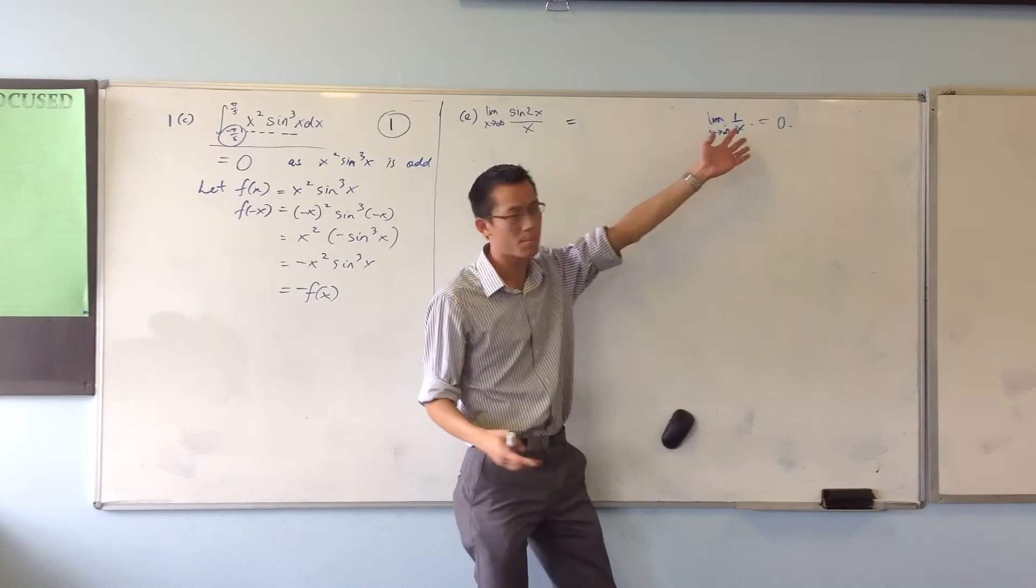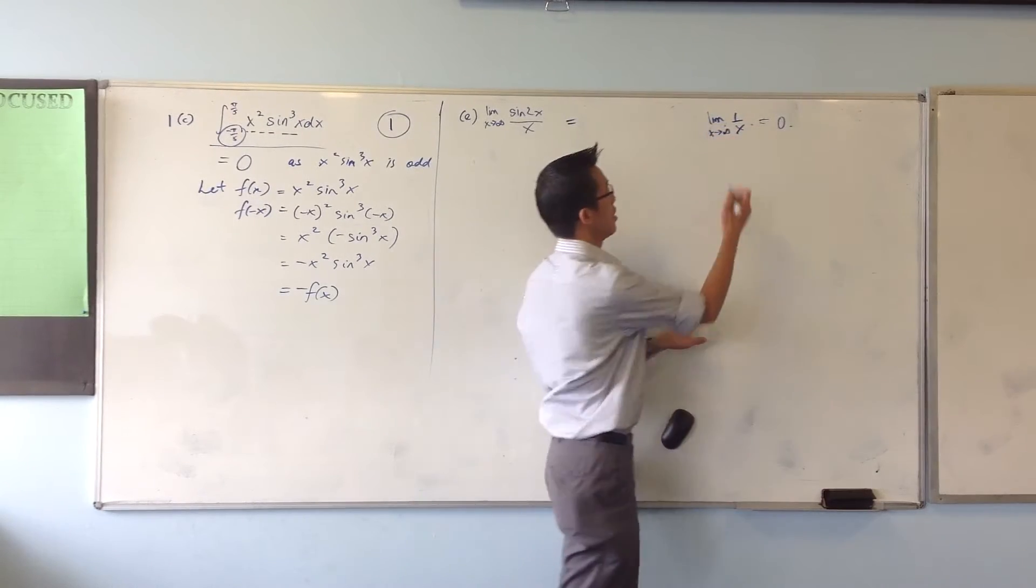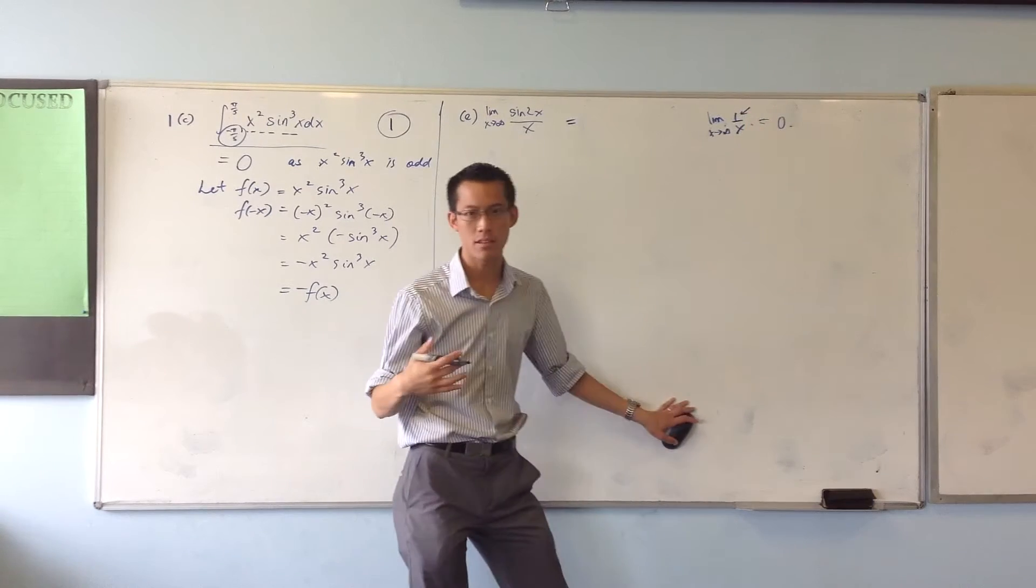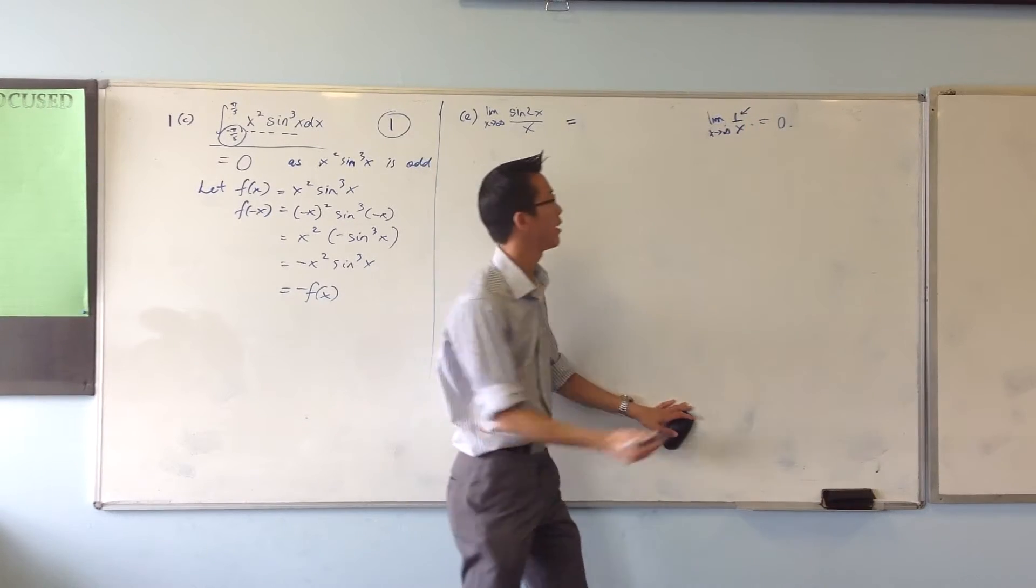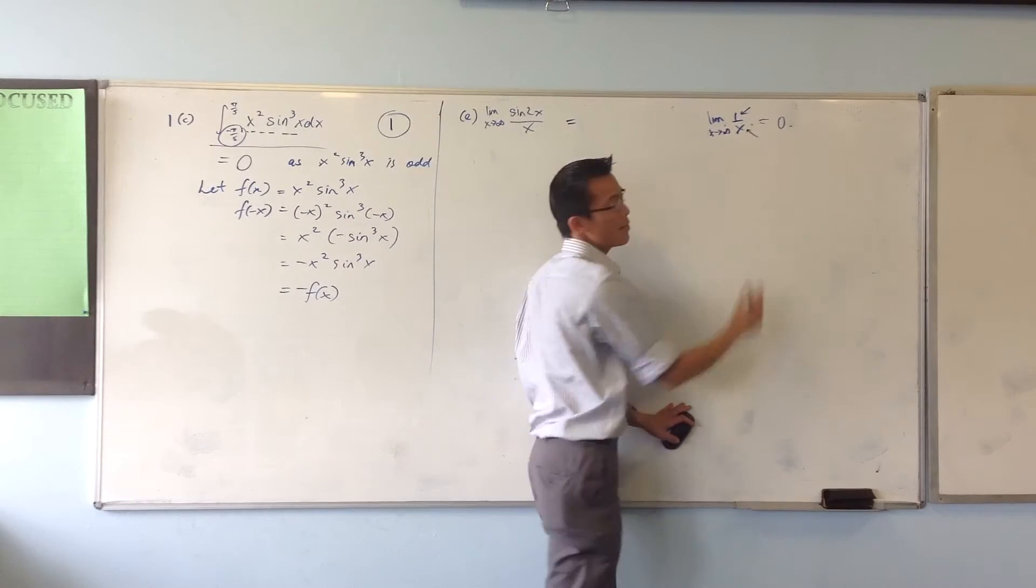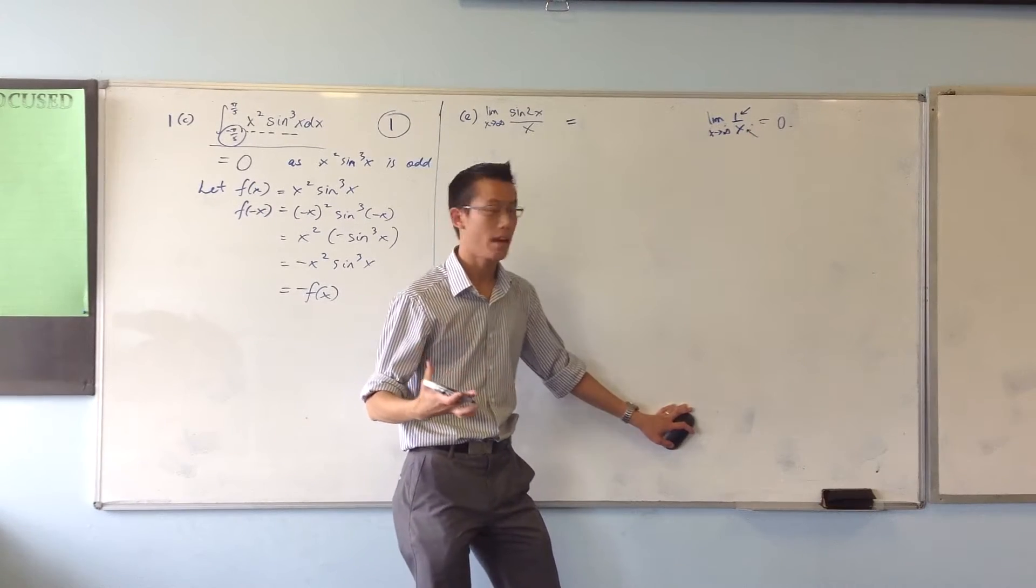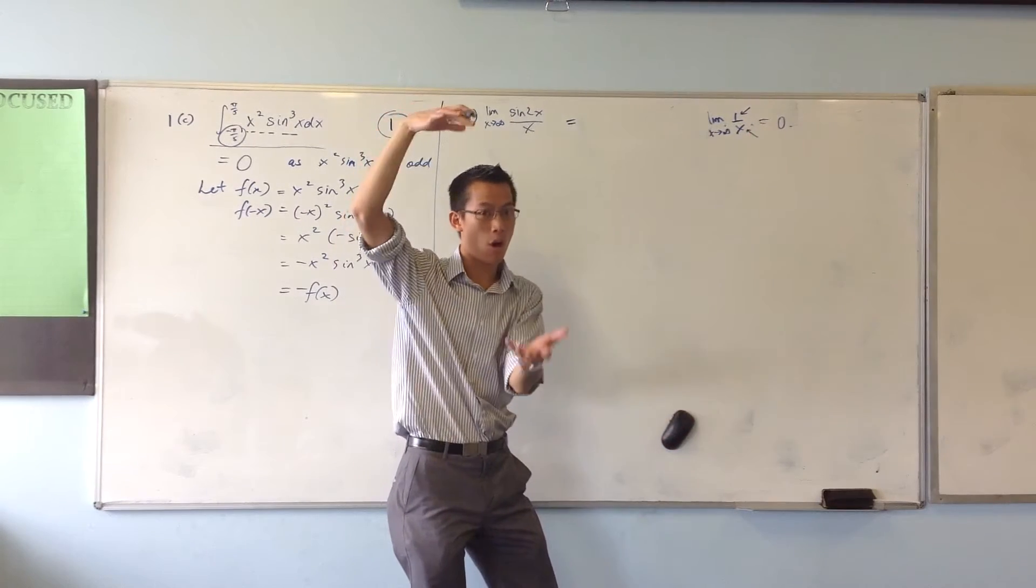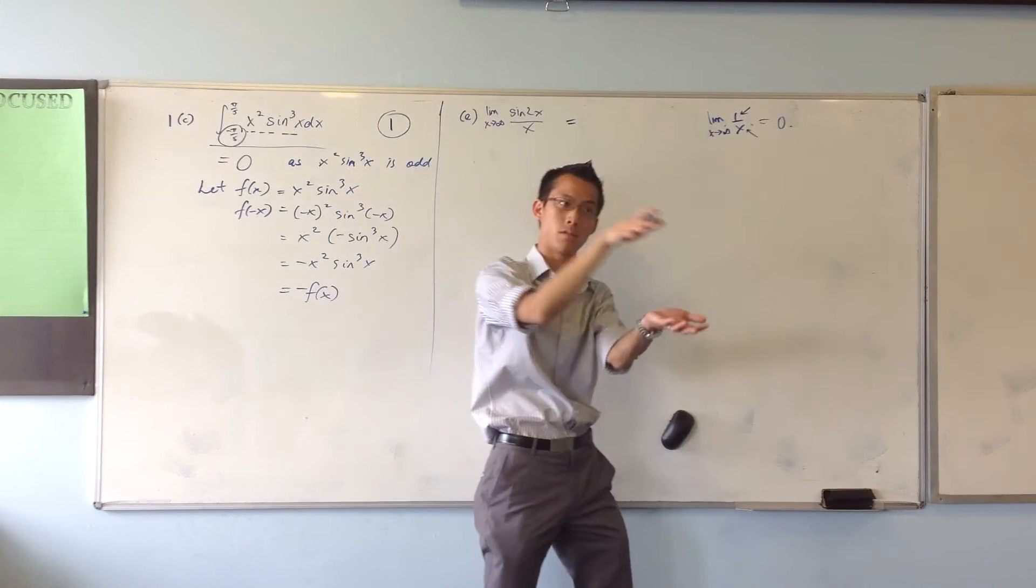You can say zero because you know what 1 over x looks like, but how do you argue? What's the logic that explains why it approaches zero? The answer is what you have on top is basically a constant. You have a constant being divided by something that's getting bigger, so the fraction is going to get smaller and smaller.